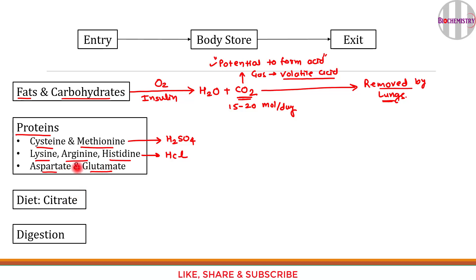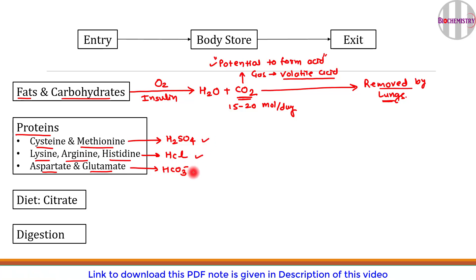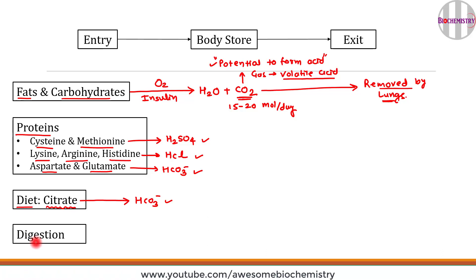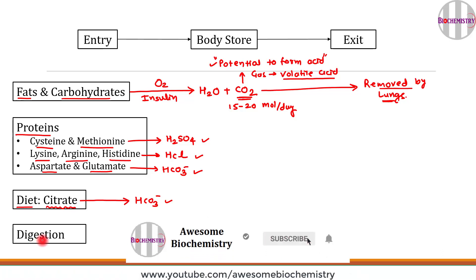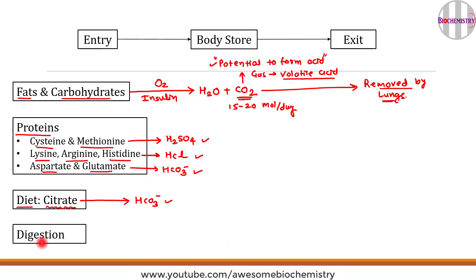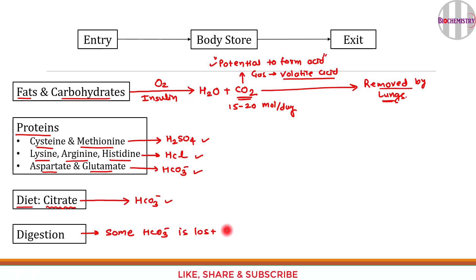Aspartate and glutamate, when catabolized, give rise to bicarbonate — an alkali. Our diet also contains citrate, which when catabolized gives rise to bicarbonate. Additionally, during digestion, pancreatic juice — which is very rich in bicarbonate — is secreted, and not all of this bicarbonate is reabsorbed by the intestine; some is lost into the feces.